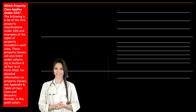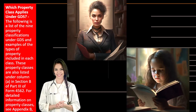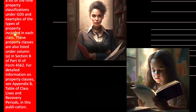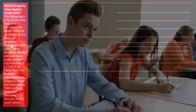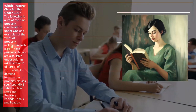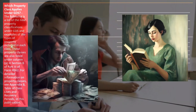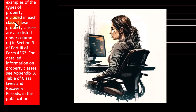Which property class applies under GDS? The following is a list of nine property classifications under GDS with examples of the types of property included in each class. This is different from what you may be used to under generally accepted accounting principles, because for the tax code, they are much more strict about how you classify property. The incentives are different with taxes — people have an incentive to increase deductions upfront, so the rules must be more stringent. These property classes are also listed under Column A in Section B of Part 3 of Form 4562, and detailed information can be found in Appendix B, Table of Class Lives and Recovery Periods.